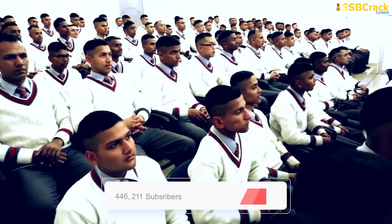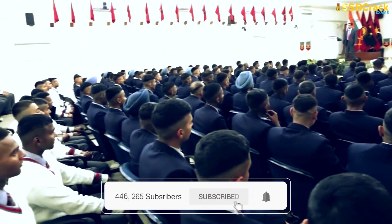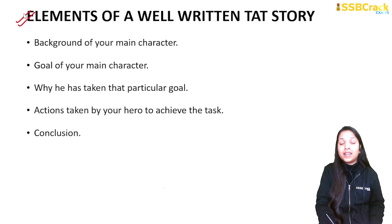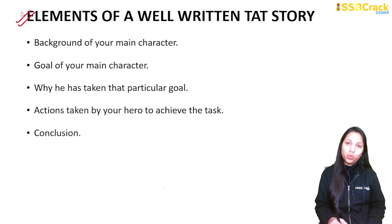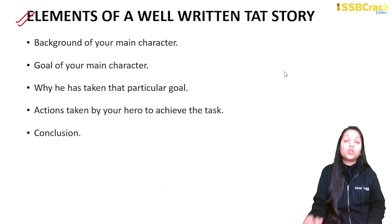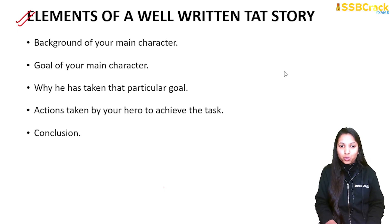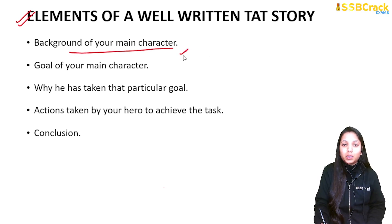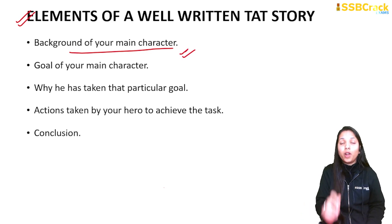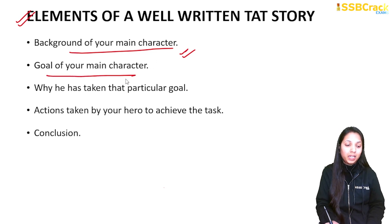TAT is your first task in your SSB psych test. Let's see what the important elements of a well-written TAT story are. In 30 seconds a picture will be shown, which you need to observe very carefully. After that, you create a basic theme and structure for your story, which should include the background of your main character. Out of all the characters, you will align yourself to one character and tell about their goal — what they want to achieve.